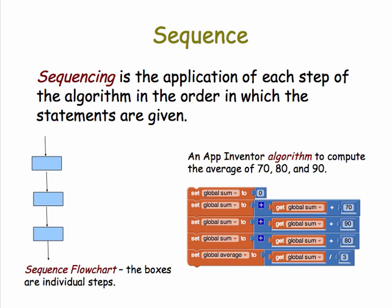Let's look a little more closely at these with some examples from App Inventor. Here's an example of a sequence algorithm in App Inventor. In this case, it's an algorithm to average three numbers. So, we start with an initial sum set to zero. We add 70. We add 90. We add 80. And the average then is that sum divided by three. So, that's just the sequence of steps.